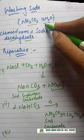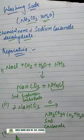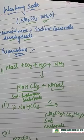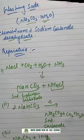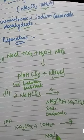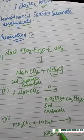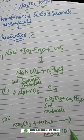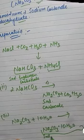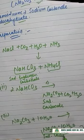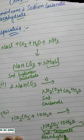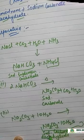Step three, the final step: we add 10 water molecules. Na2CO3 plus 10 H2O gives Na2CO3·10H2O, that is sodium carbonate decahydrate, also known as washing soda.